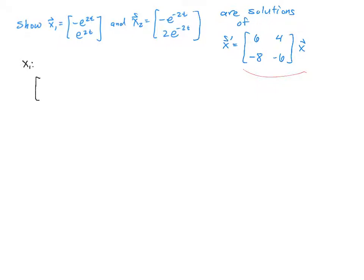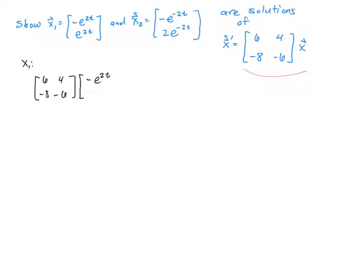For x1, I'm taking the matrix 6, 4, negative 8, negative 6, and multiplying it times the solution vector: negative e to the 2t and e to the 2t. When you multiply matrices and vectors, it's like a dot product. We're first going to take the row 6, 4 and multiply it vertically times the vector, giving us 6 times negative e to the 2t plus 4 times e to the 2t.